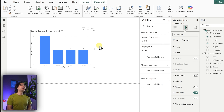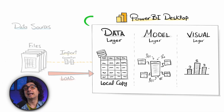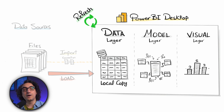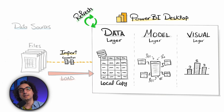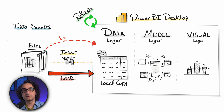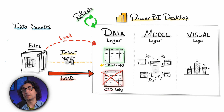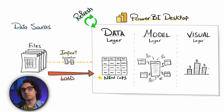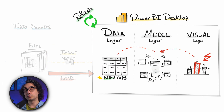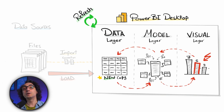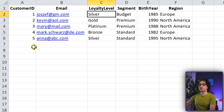To solve this, we have the refresh process. With import mode, everything happens inside Power BI and it doesn't need to go to external sources until you trigger a refresh. During the refresh, Power BI repeats the whole import process: it connects again to the original file, reads everything - rows, columns, structure - and copies everything into Power BI. We now have two copies: an old one and a fresh new one. Power BI wipes the old copy and replaces it entirely with the new one, and the model and visuals can work with fresh data.